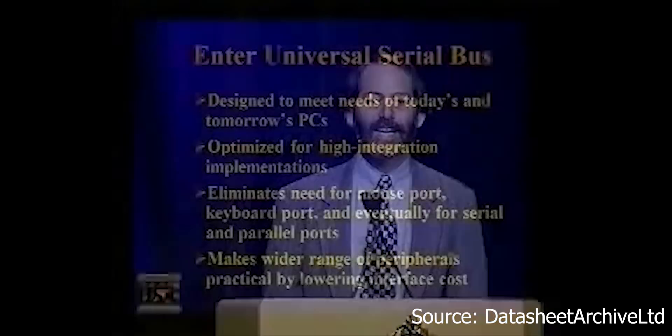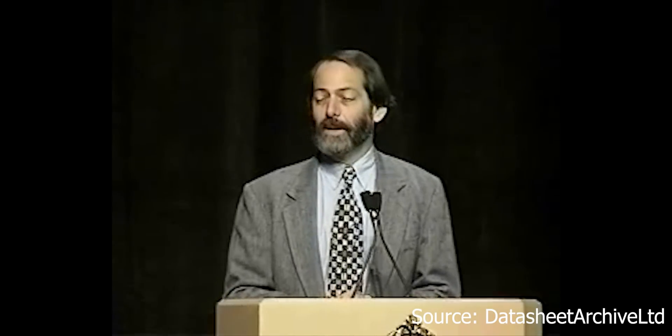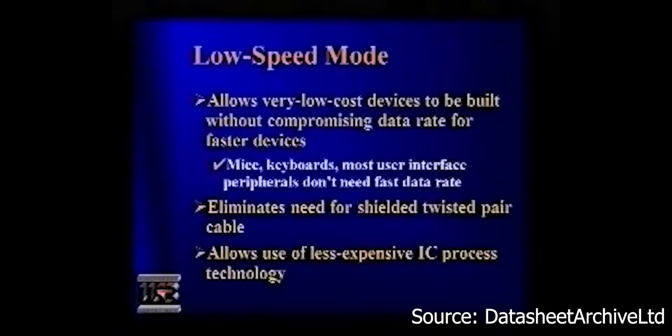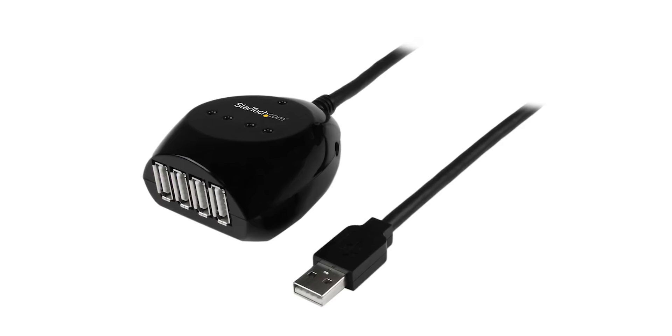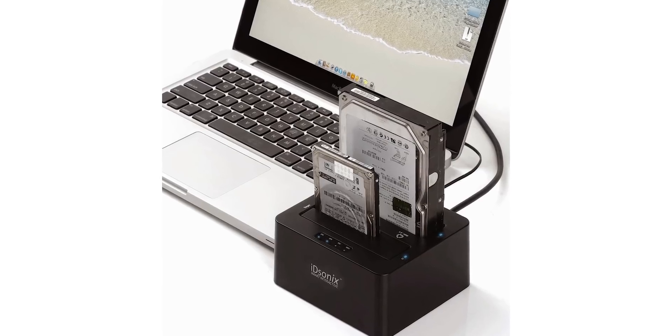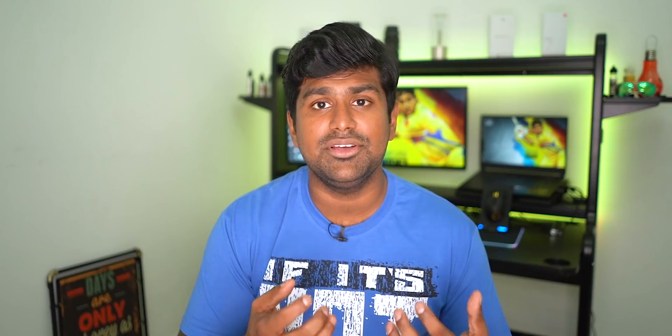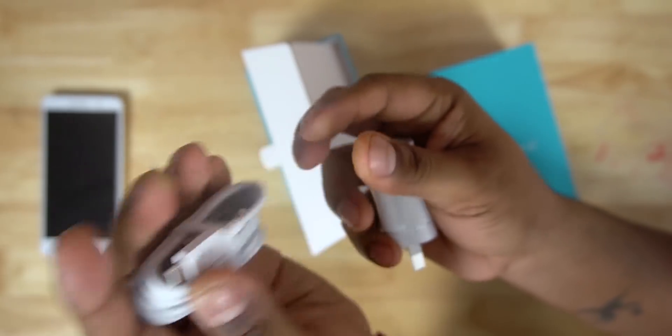The very first USB standard, USB 1, came in the year 1996. It had a maximum signaling rate of 12 megabits per second, and back then the standard wasn't too popular. USB as a standard only started gaining momentum with the launch of USB 2 in the year 2000. USB 2 brought a maximum signaling rate of 480 megabits per second — the start of high-speed USB. We still see a ton of devices using USB 2 today, partly because it introduced smaller connectors like micro USB and better power transfer, allowing mobile devices to be both connected and charged over USB.